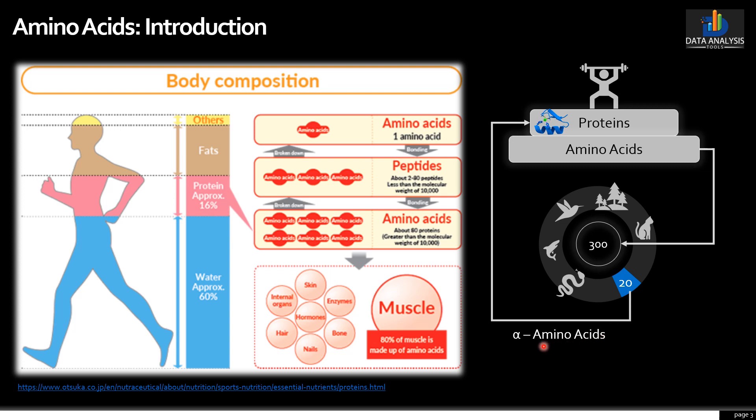All these amino acids are called alpha amino acids. But why are they called alpha amino acids? Because the central carbon is an alpha carbon. In organic chemistry, the first carbon atom directly bonded to an atom, group, or functional group such as a carbonyl or other moiety of interest is called the alpha carbon, as alpha is the first letter of the Greek alphabet, and it is common to use Greek letters in nomenclature.